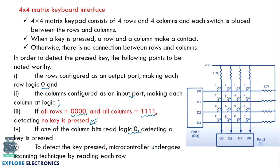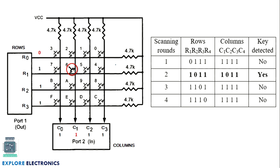If one of the column bits reads 0 — instead of all columns being 1111 — it means a key has been pressed. Keys are labeled 0 through F, giving 16 keys. When any key is pressed, the column output will be something other than 1111. If the column value changes to 0, it means some key is pressed, and the microcontroller will start to detect which key it is.